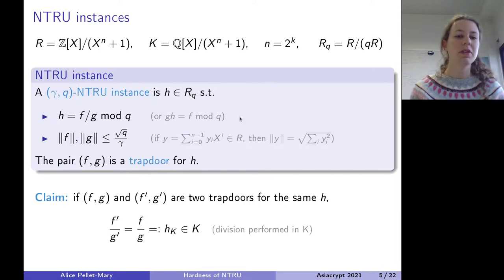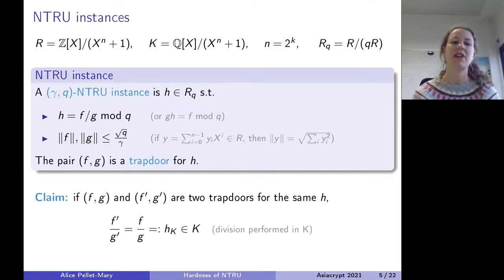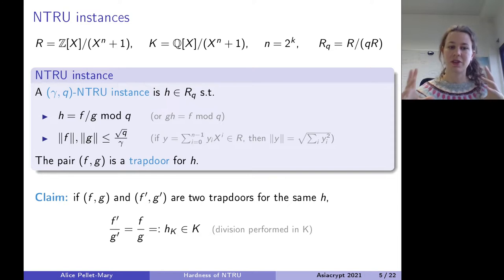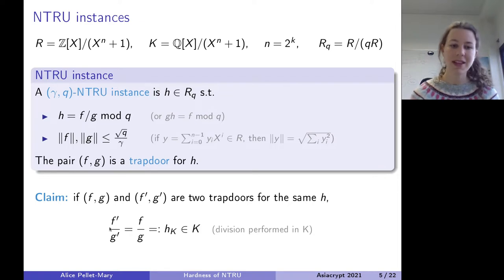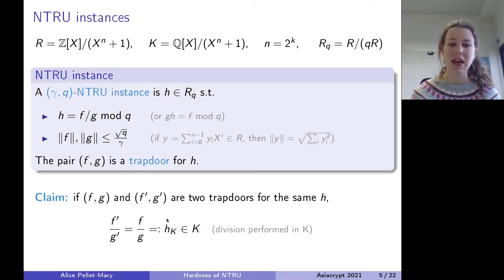An important remark: F and G are not unique. You can have multiple ways of writing H as F over G and F' over G', but they are unique in the sense that the span of the vector F is unique. If I have two trapdoors F, G and F', G', then F' = alpha*F and G' = alpha*G for some alpha in the field. This means F over G equals F' over G' when division is performed over the field K, not modulo Q. This unique quantity I call H_K — a lift of H over the rationals.